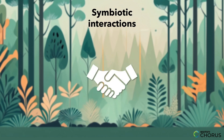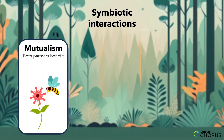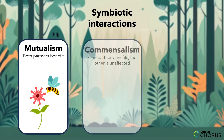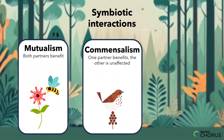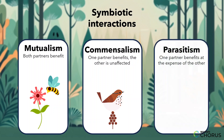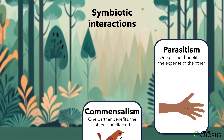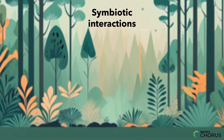In our final exploration, we'll tackle symbiotic interactions — nature's partnerships where different species team up for survival. There are three types: mutualism, where both partners benefit; commensalism, where one benefits and the other is unaffected; and parasitism, where one benefits at the expense of the other. These partnerships are the secret sauce of ecosystems, contributing to their health and harmony.